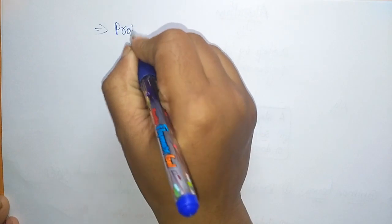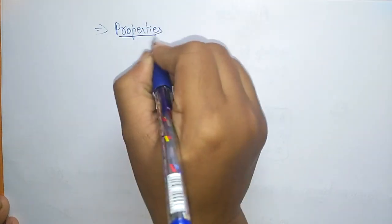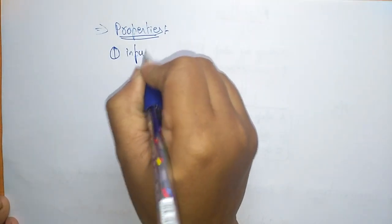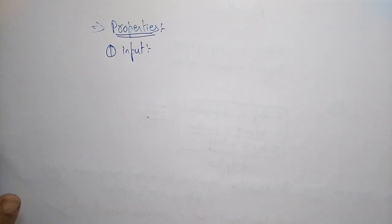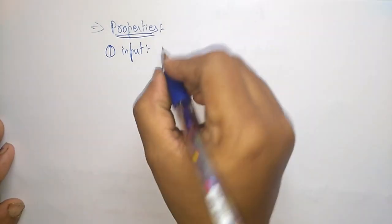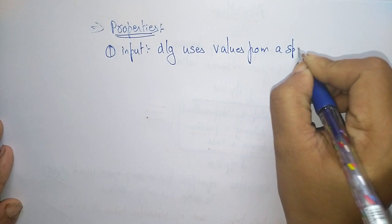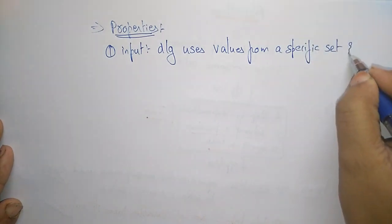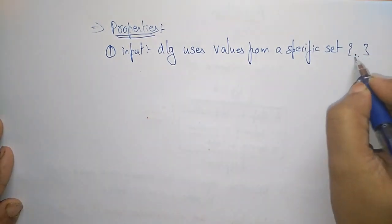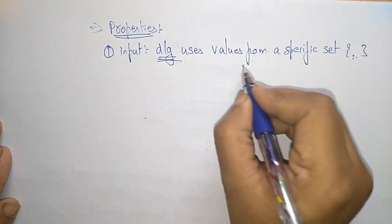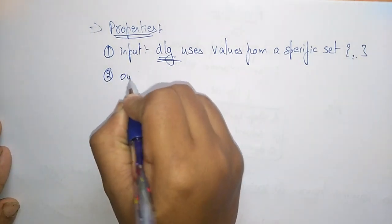Now coming to the properties of the algorithm. So far we discussed that an algorithm is a step-by-step method for solving a particular problem or doing a task. The first property is input. Whatever requirements or information we are giving to the algorithm, that is called input. The algorithm uses values from a specific set — those are the inputs used by the algorithm.